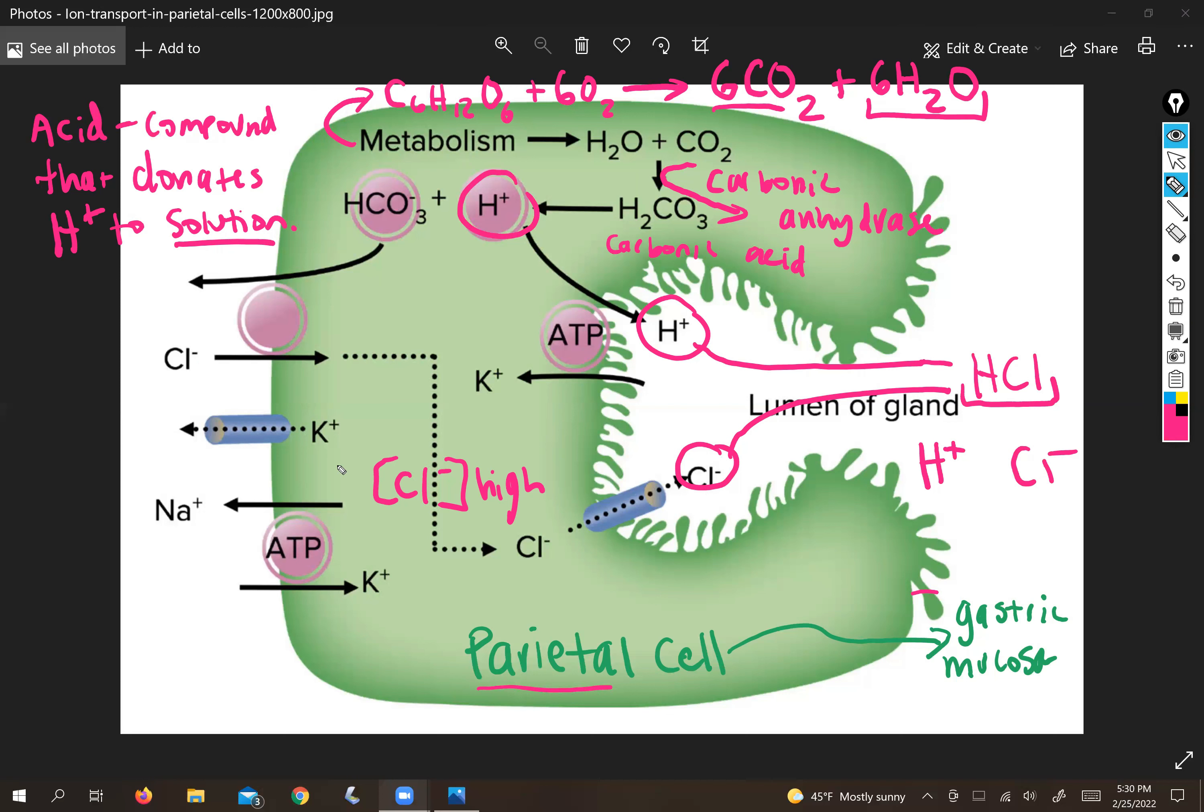We might as well use the products of that and repurpose them for something else. So in that case, we are taking the proton and putting it in the lumen, and then the bicarbonate we can exchange easily for chloride, and that takes care of our chloride requirements. Voila, we've got hydrochloric acid.